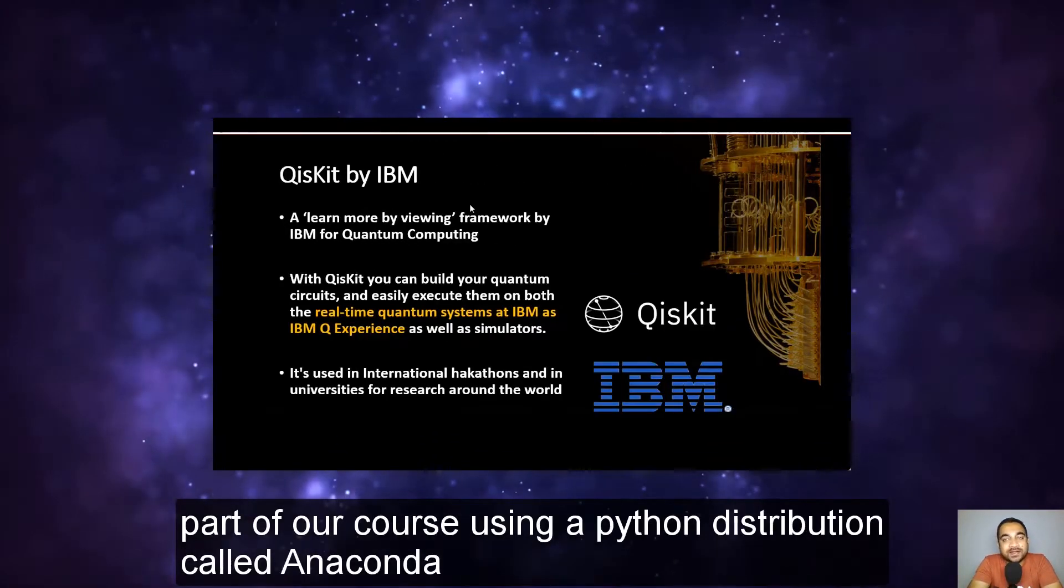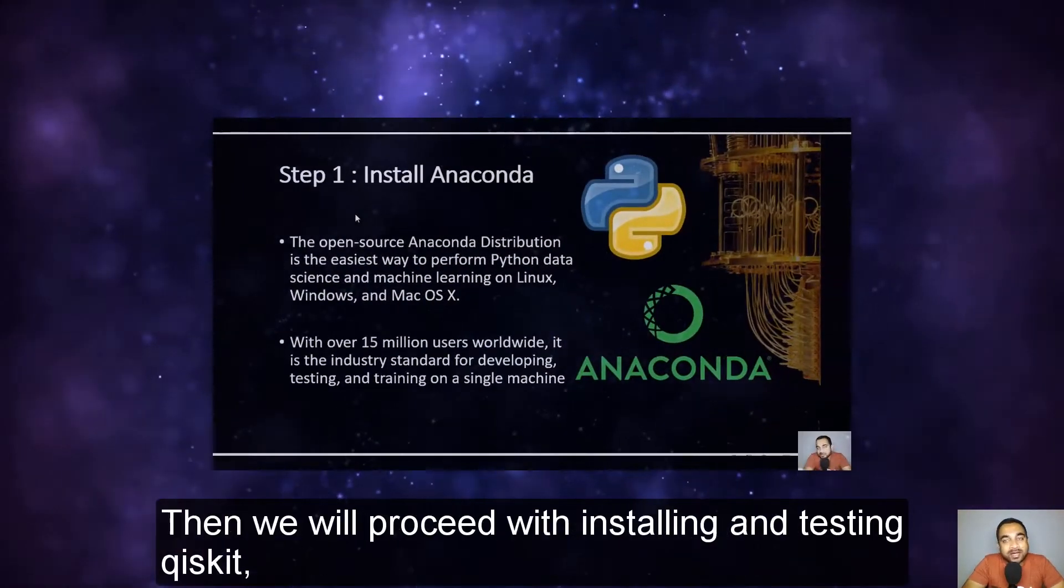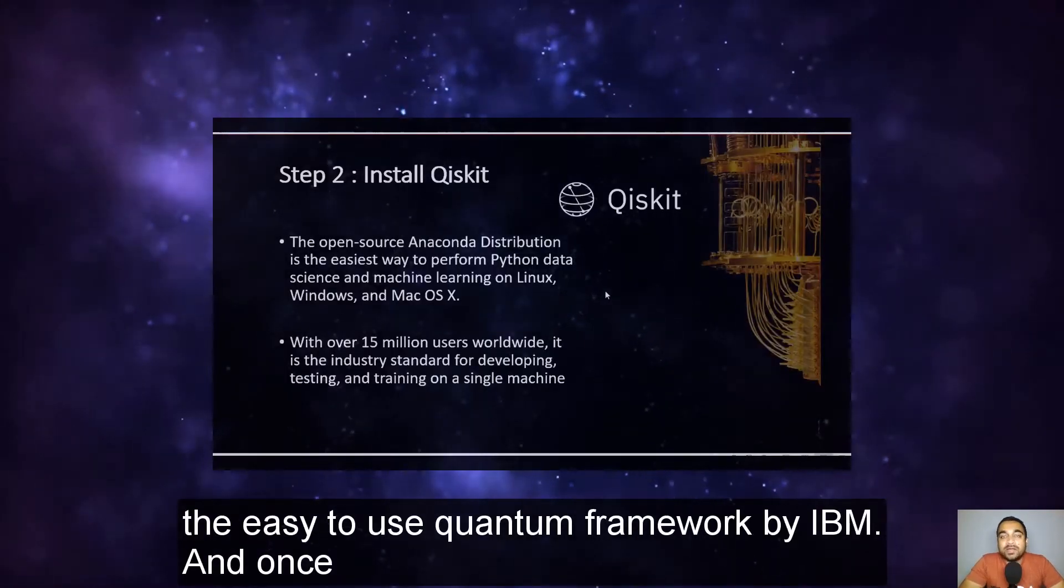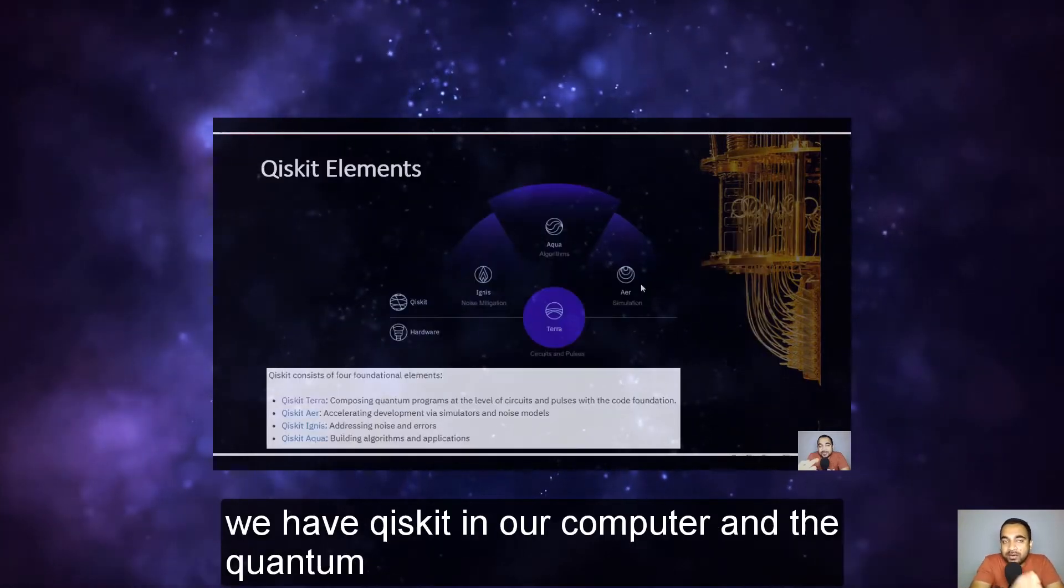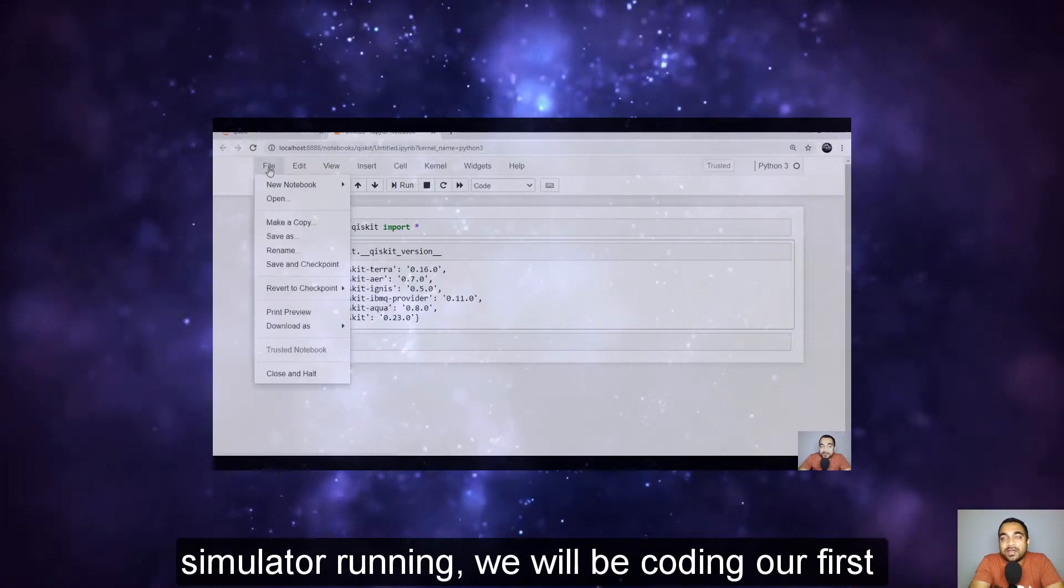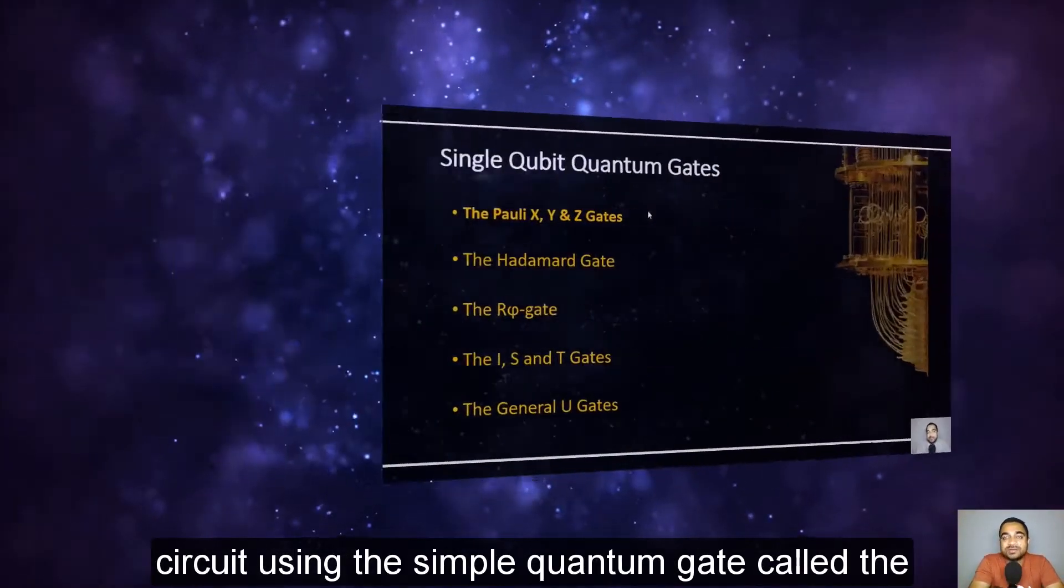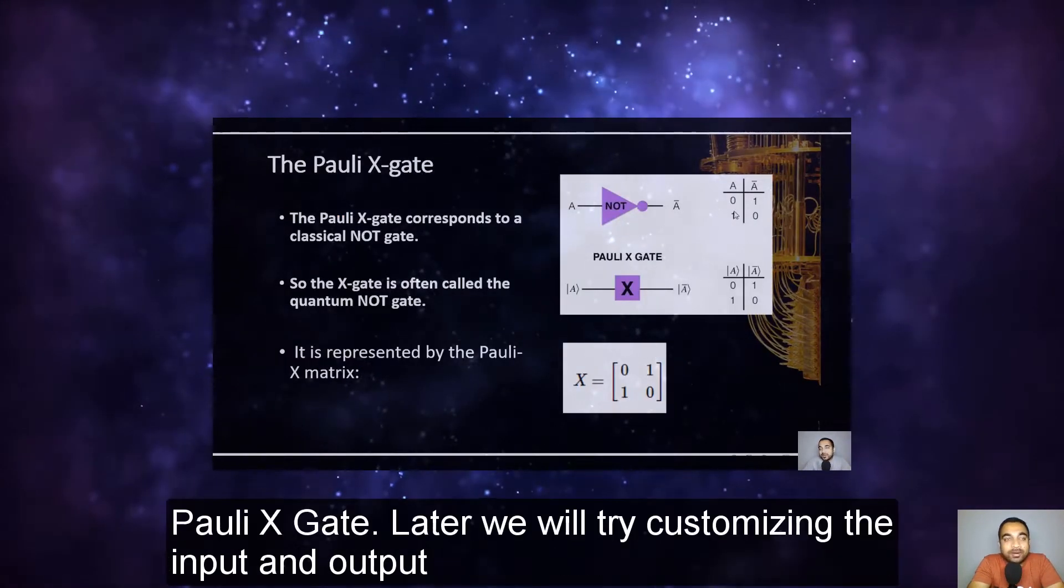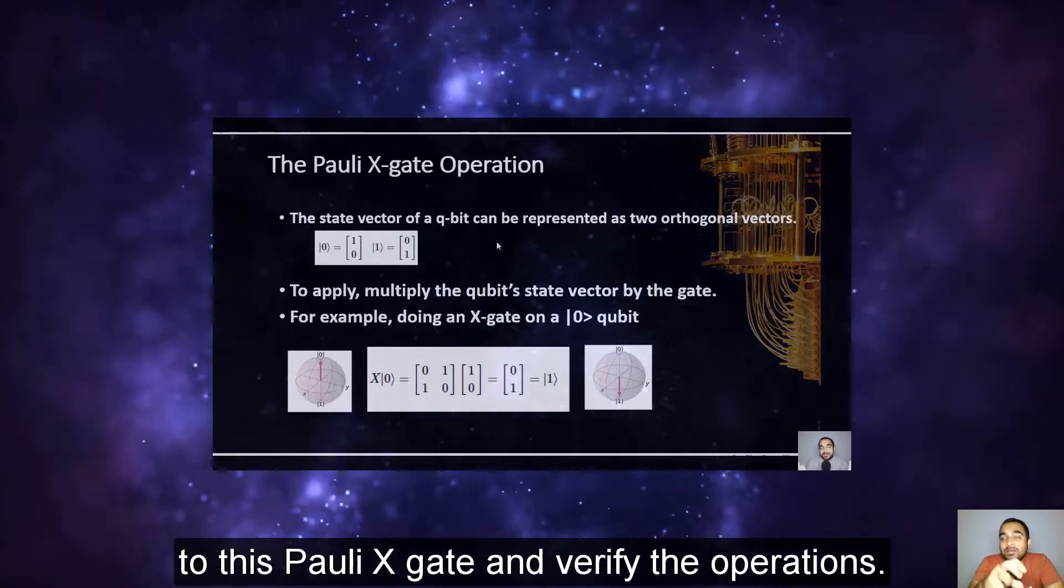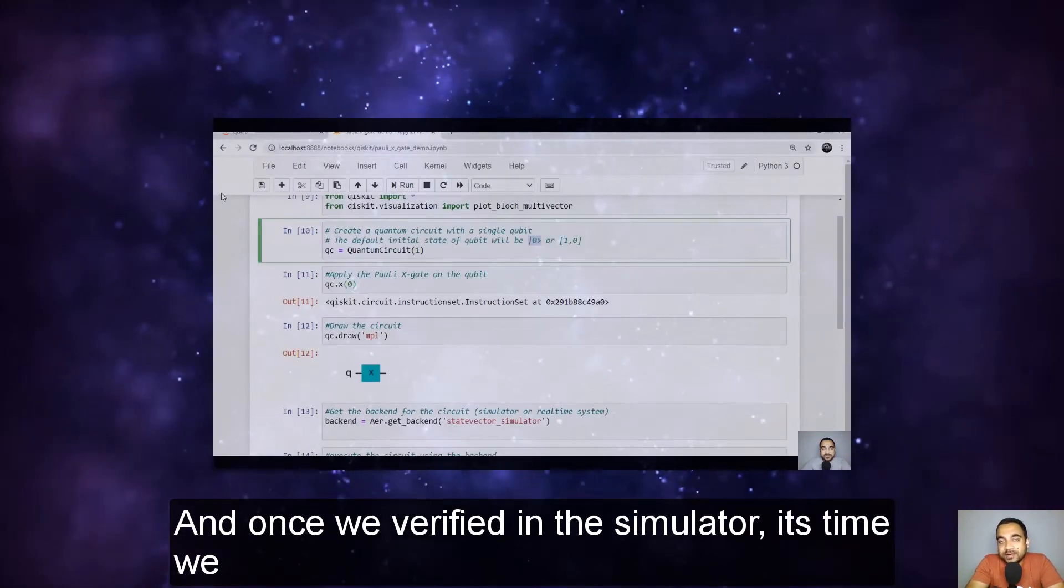We can now proceed with the practical part of our course using a Python distribution called Anaconda. Then we will proceed with installing and testing Qiskit, the easy to use quantum framework by IBM. And once we have Qiskit in our computer and the quantum simulator running, we will be coding our first quantum circuit using the simple quantum gate called the Pauli X gate. Later we will try customizing the input and output to this Pauli X gate and verify the operations.